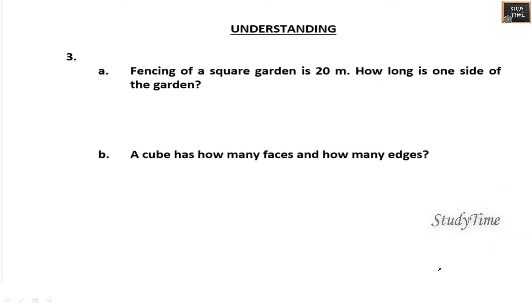Fencing of a square garden is 20 meters. How long is one side of the garden? 20 divided by 4 is 5 meters. A cube has how many faces and how many edges? 6 faces and 12 edges.